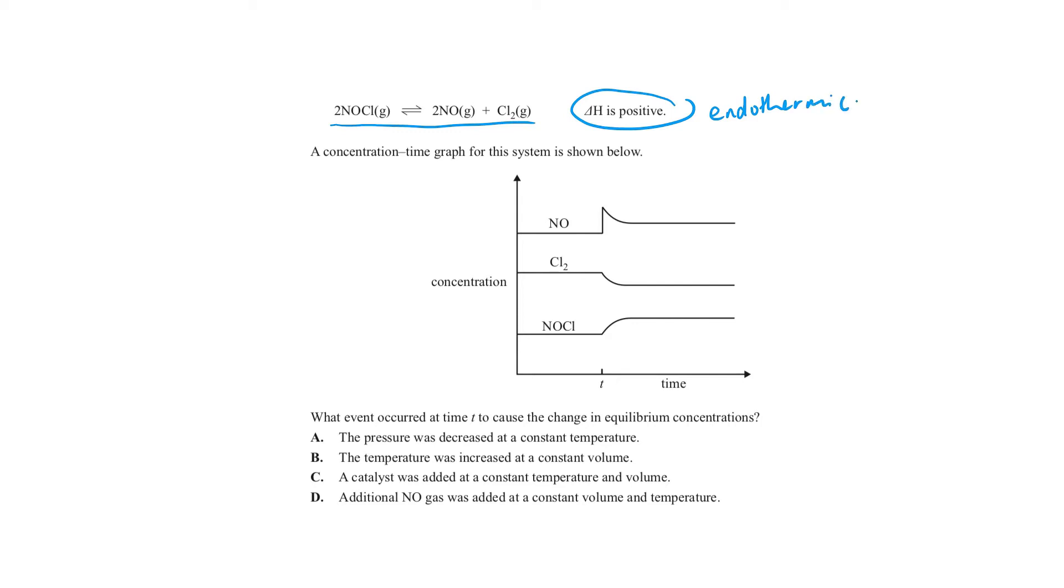So this is a multiple choice question, so we'll go through the answers. What event occurred at time T to cause a change in equilibrium concentrations? So here we have time T. If we look at time T, we notice that NOCl slowly increased and chlorine gas slowly decreased. However, our nitric oxide rapidly increased.